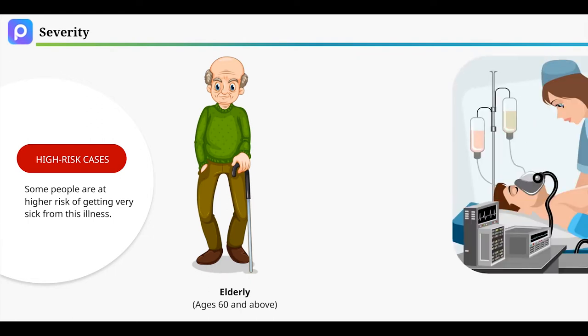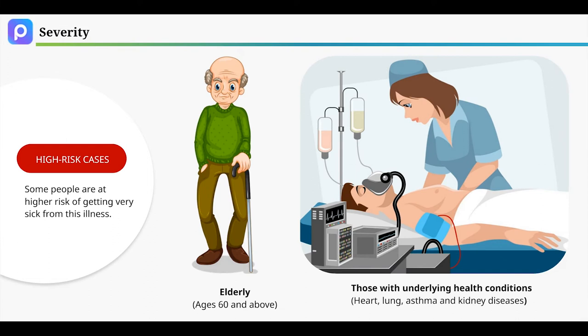Those with underlying health conditions such as heart, lung, asthma, and kidney diseases because of low immunity, that is, the ability of the body to fight off infections.